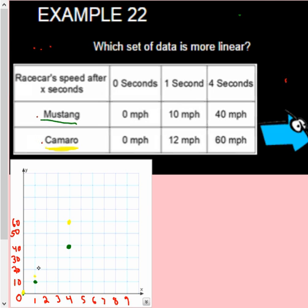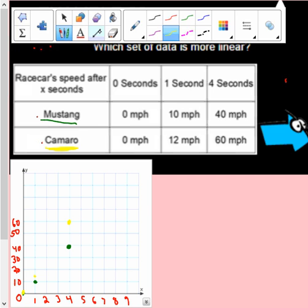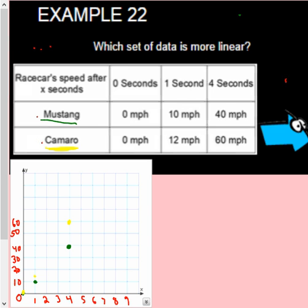Once again, these both look pretty close. So let's draw lines through both of them and see which one looks the best. So let's start with the green. This is the Mustang. That one looks pretty good.